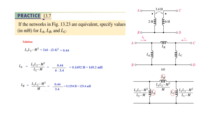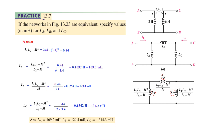Continuing: Lb = 0.44 / (L1 − M), giving approximately 129.4 mH. For Lc, using the same formula with L1 − M substituted, the answer is −134.2 mH. I hope this gives you an understanding of how to convert and solve problems involving T and Pi networks. Thank you.